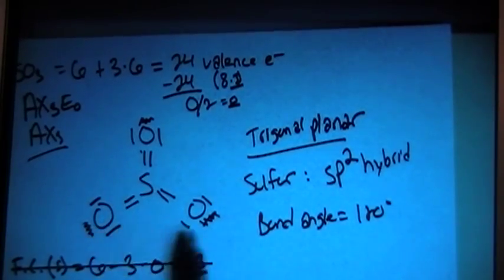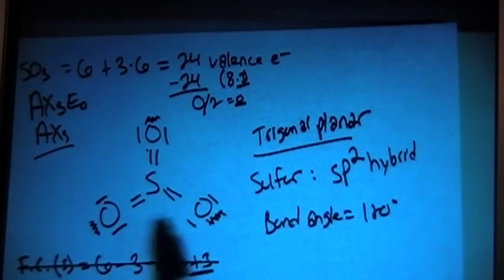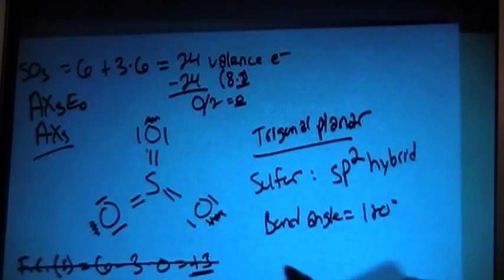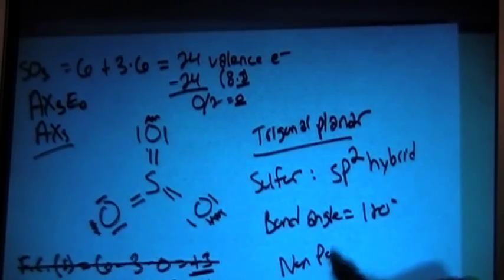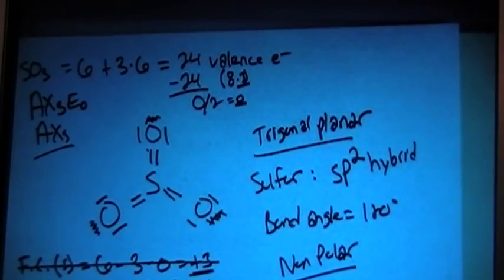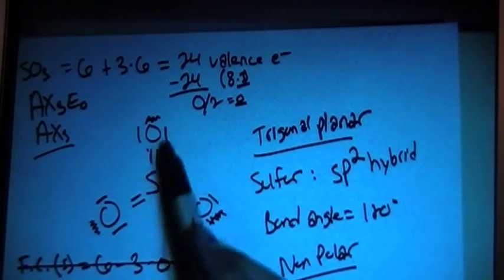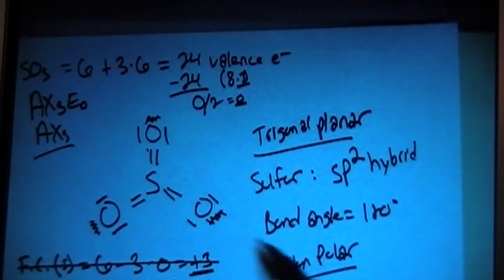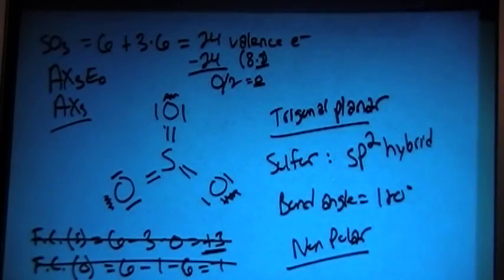And because each of the three peripheral atoms are the same, they're all oxygen, this is going to be a non-polar molecule, because all these oxygens, their dipole moments will cancel each other out, giving a net dipole moment of 0, which results in a non-polar molecule.